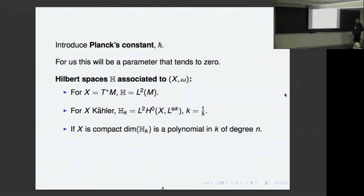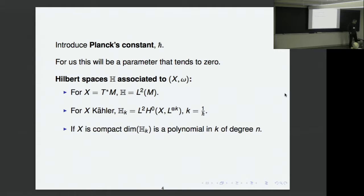These polarizations allow us to associate Hilbert spaces to the symplectic manifold. In case X is a cotangent bundle, the Hilbert space is L² of N. For X Kähler, one takes powers of the holomorphic line bundle — the power is the reciprocal of Planck's constant — and takes the L² holomorphic sections. This is an H-dependent Hilbert space whose dimension grows as a polynomial in k, where N is half the dimension of X.